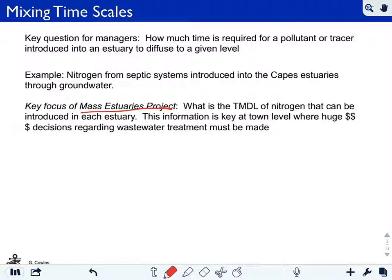In their case, they're looking at nitrogen discharge from septic and sewer and road runoff into these estuaries, which can lead to eutrophication.